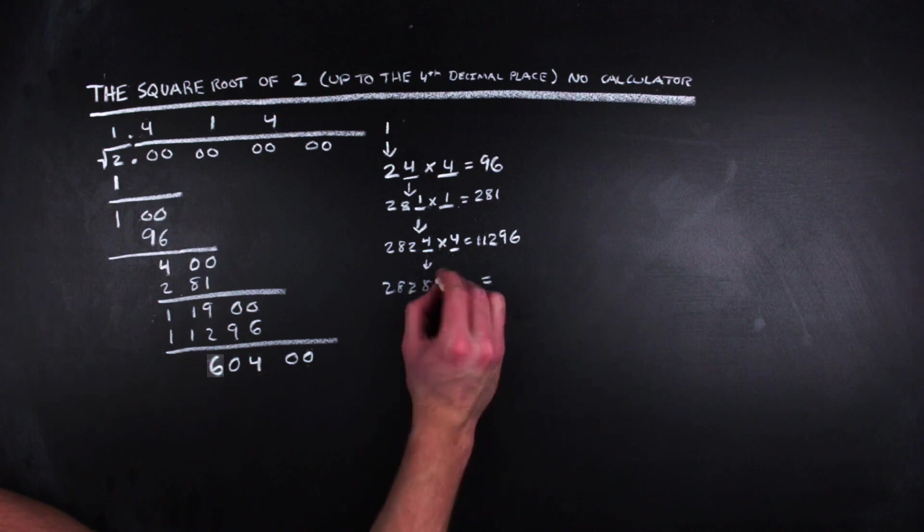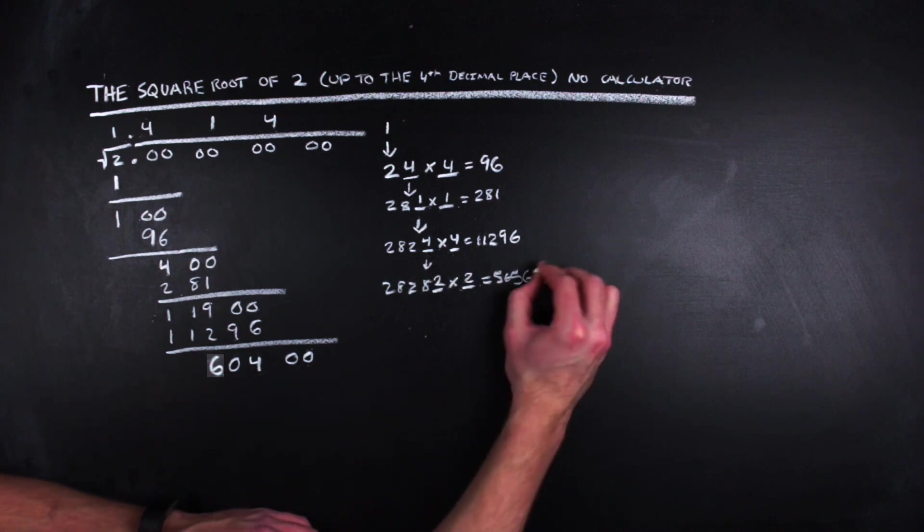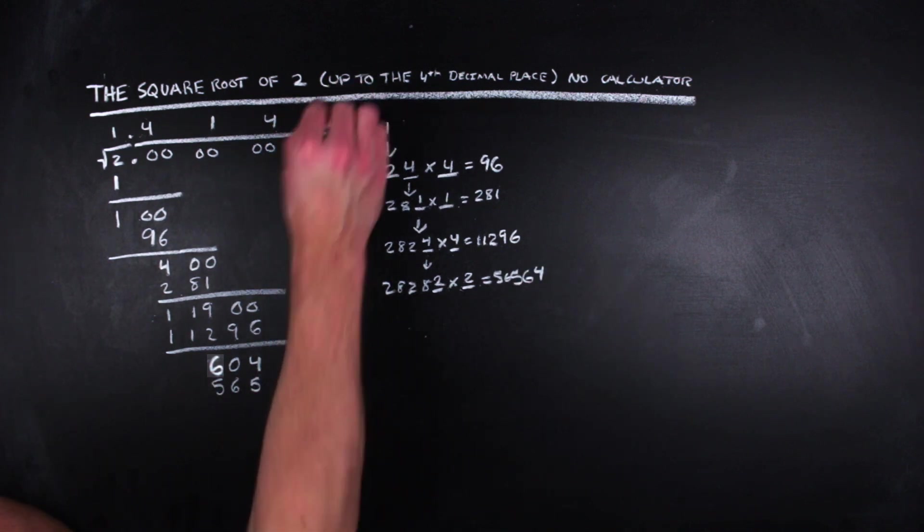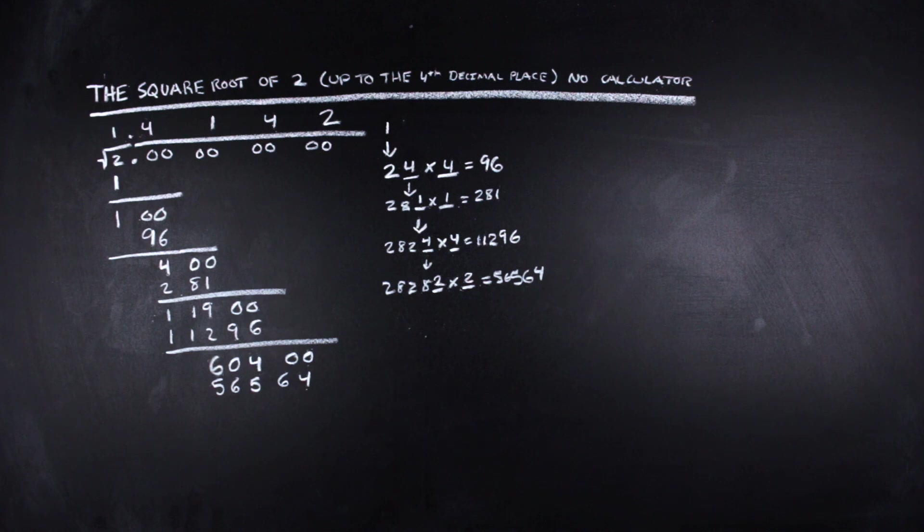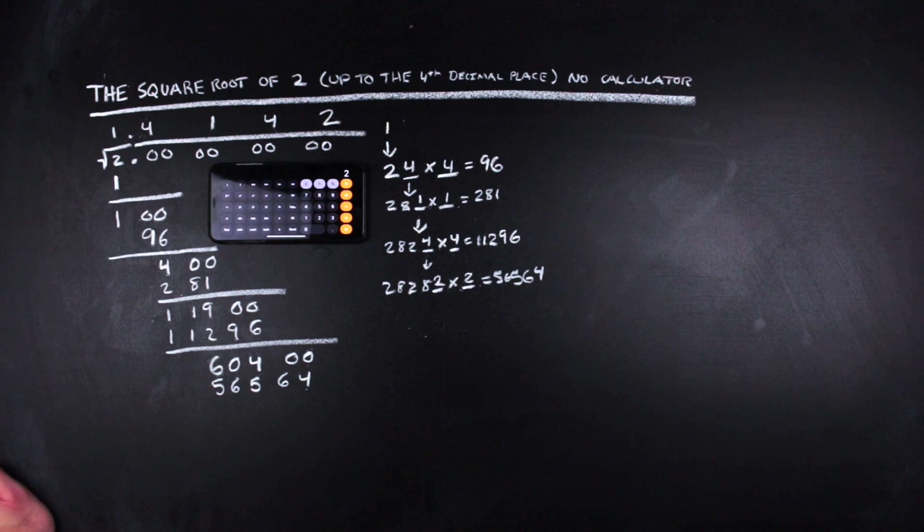Again, for the last step, we pull down and double the four, adjoin the best choice which happens to be two, to yield 56,564. And stopping there without doing the subtraction, we get the square root of two up to the first four decimal points is 1.4142. And letting my phone go through the same computation, we find that we are in fact correct up to the first four decimal places.